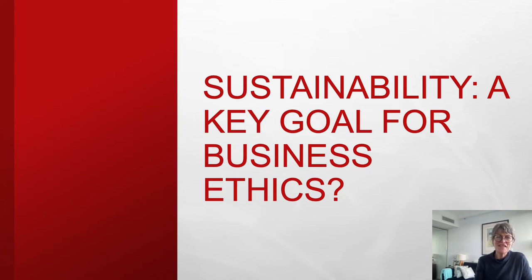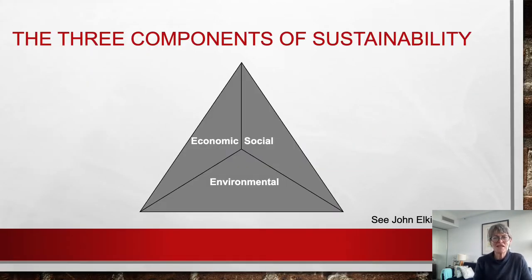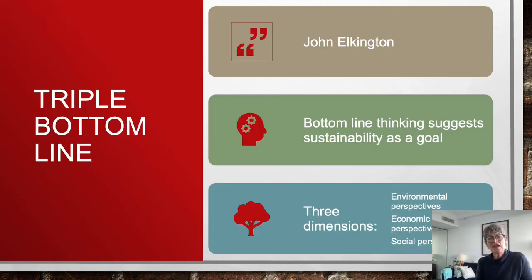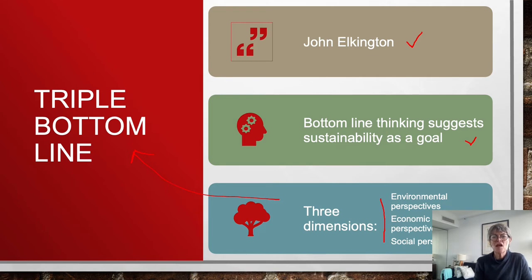Sustainability is a key goal for business ethics. The three components — economic, social and environmental — give us a triple bottom line. This stems from the seminal work of John Elkington and is about bottom line thinking, suggesting sustainability as a goal. It means not just ensuring our business is financially viable, but also meeting environmental and social considerations — balancing a triple bottom line, not just a financial one.